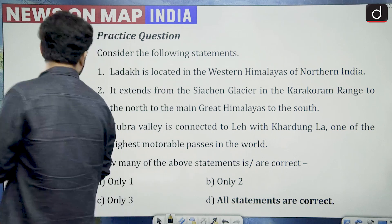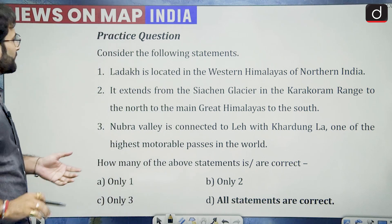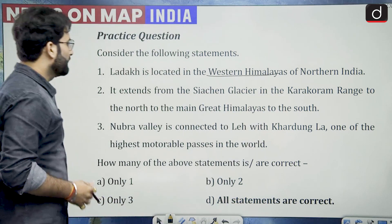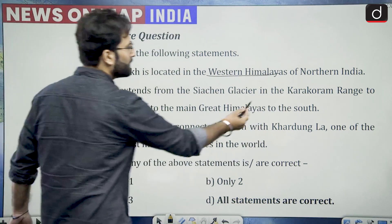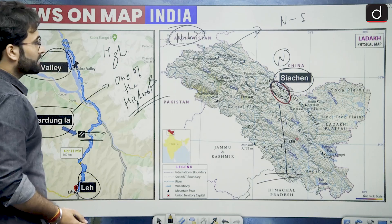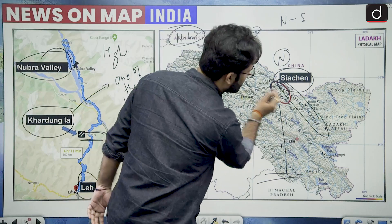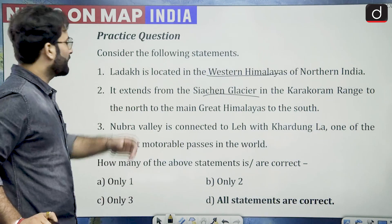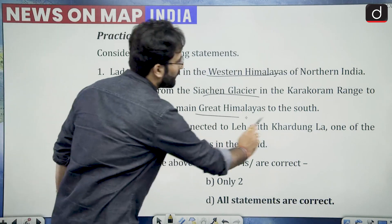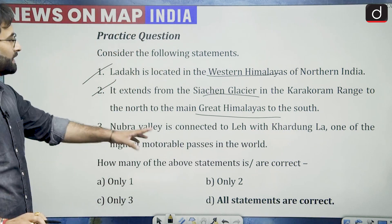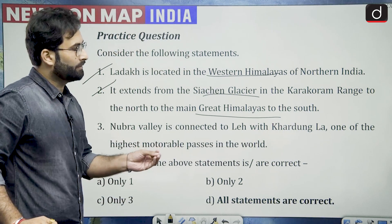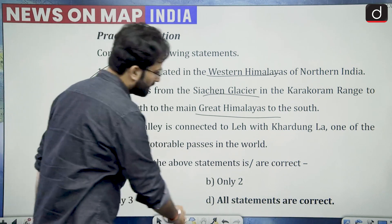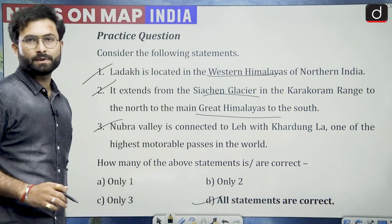Going to the question, most of you have given the correct answer. Ladakh is located in the western Himalayas — this is correct. It extends from Siachen glacier in the Karakoram range — here you can see this is your Karakoram range — to the Great Himalayas in the south — this is also correct. Nubra Valley is connected with Leh via Khardungla Pass — we have seen this — this is also correct. Your answer would be option D: all the statements are correct.